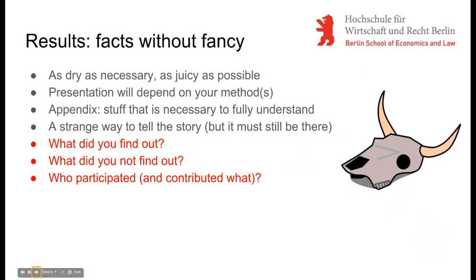The next section, results, is often felt to be the most rewarding from the point of view of the author, because this is where you can put all that you have found out on the table. The only requirements are that it is true, transparent, systematically presented, and as complete as possible. How exactly you present your results will depend on your method and your topic — whether you choose graphs, tables, drawings, or text. Anything that does not belong to the story of your research does not have to be here. Survey questions, detailed numerical evaluations and other materials used to arrive at your results can and should be put in the appendix. This is the place for anything required to fully understand your work, but not required to understand the story behind your work.